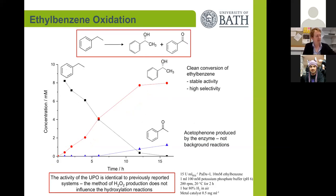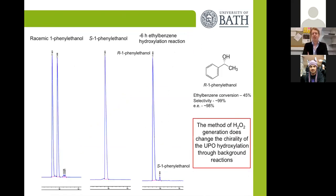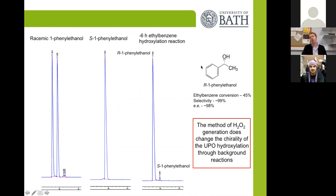One of the other real benefits of enzymatic systems is that you're able to install chirality into molecules. We analyzed the 1-phenylethanol that we were producing — comparing to a standard of one of the enantiomers — and during our six-hour hydroxylation reaction, we were still able to achieve an EE of over 98% towards our phenylethanol. This shows that the presence of the heterogeneous catalyst is not a detriment to the amazing properties of the enzyme in being able to install chirality into these molecules.